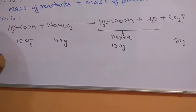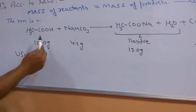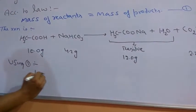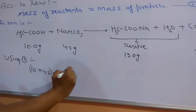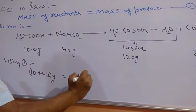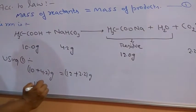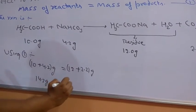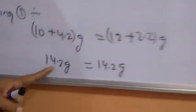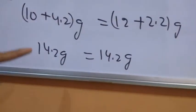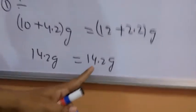Now using the first equation, you just add the weight of the reactants: 10 plus 4.2 gram. This weight becomes 14.2 gram. This weight again becomes 14.2 gram. So this numerical is also showing that 14.2 gram of the reactants remain conserved after the reaction, and the product is also showing the weight of 14.2 gram.